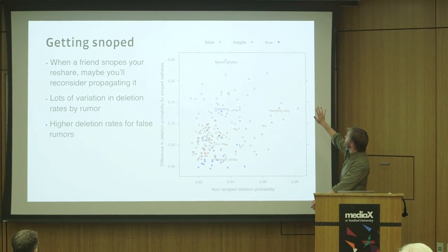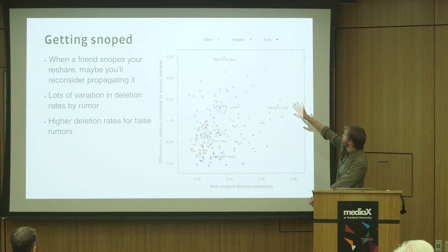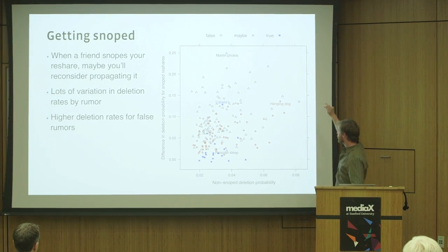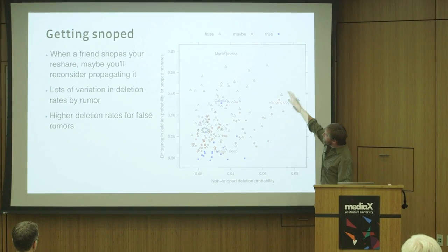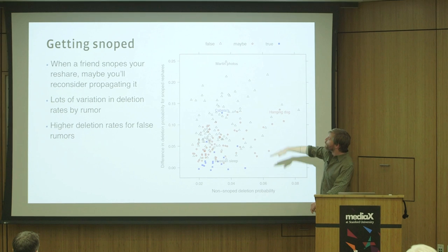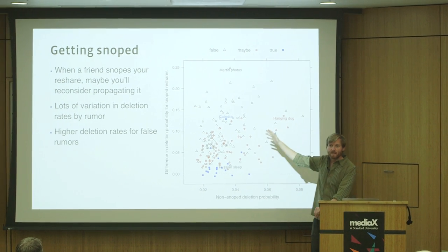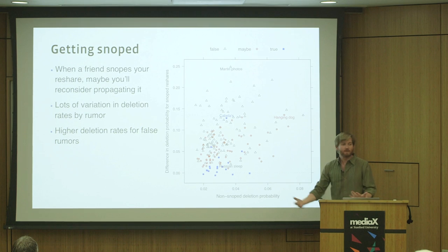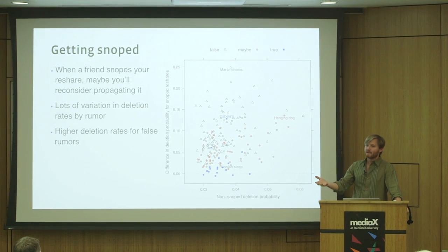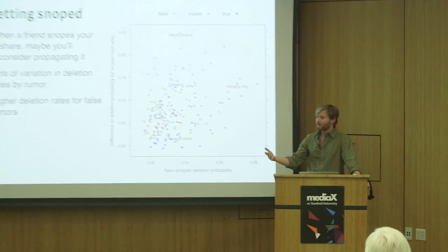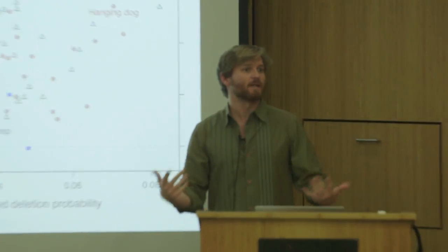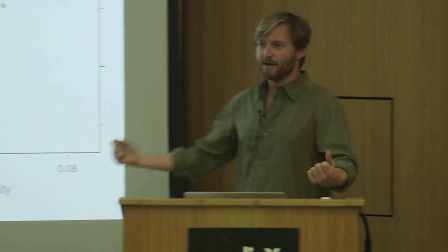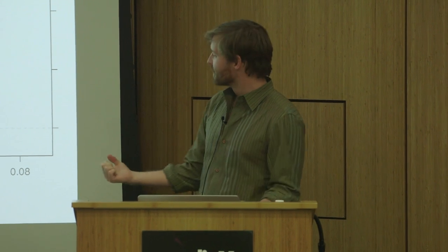One of the things that we find is that if your friend does snope your reshare of some rumor, this does result in a substantially higher deletion rate for false rumors. Here's actually a plot of all the relatively popular rumors in this data set, indicated by whether they're false, true, or maybe somewhere in between. On the y-axis is basically how much more likely they are to be deleted if you get snoped—if someone links to the Snopes article.